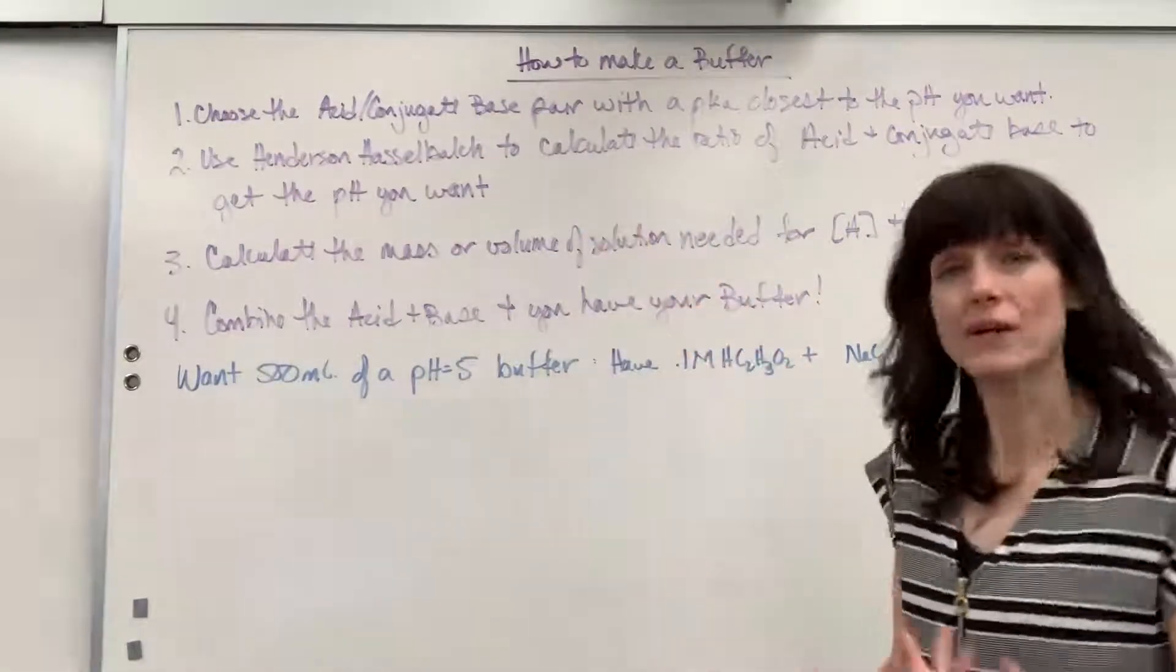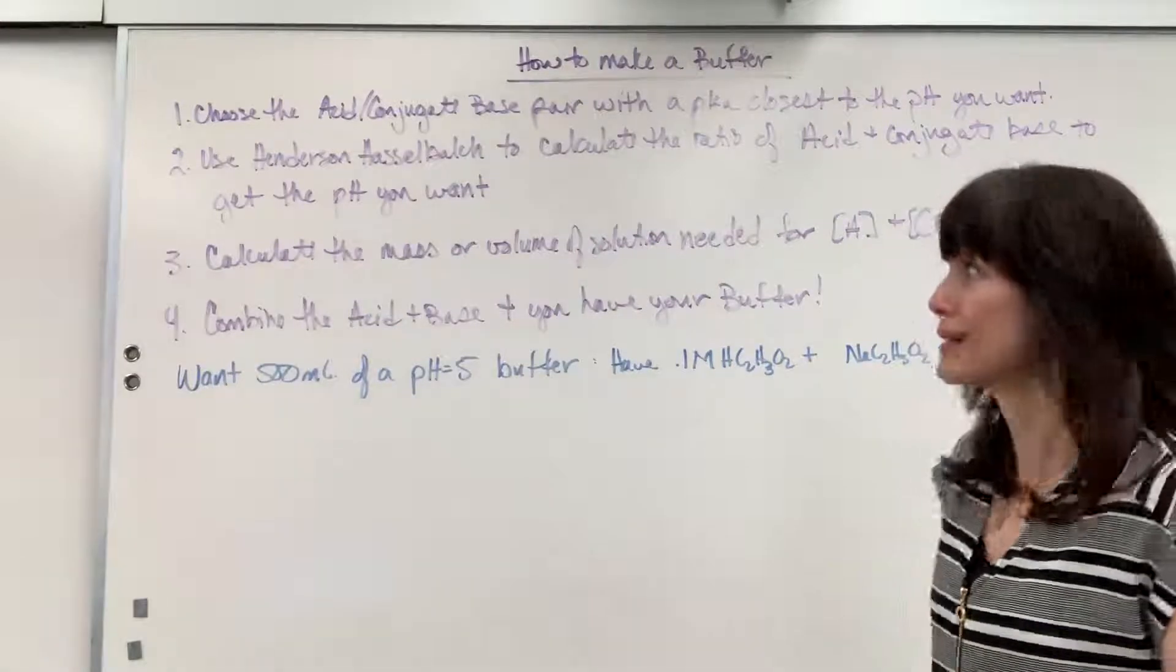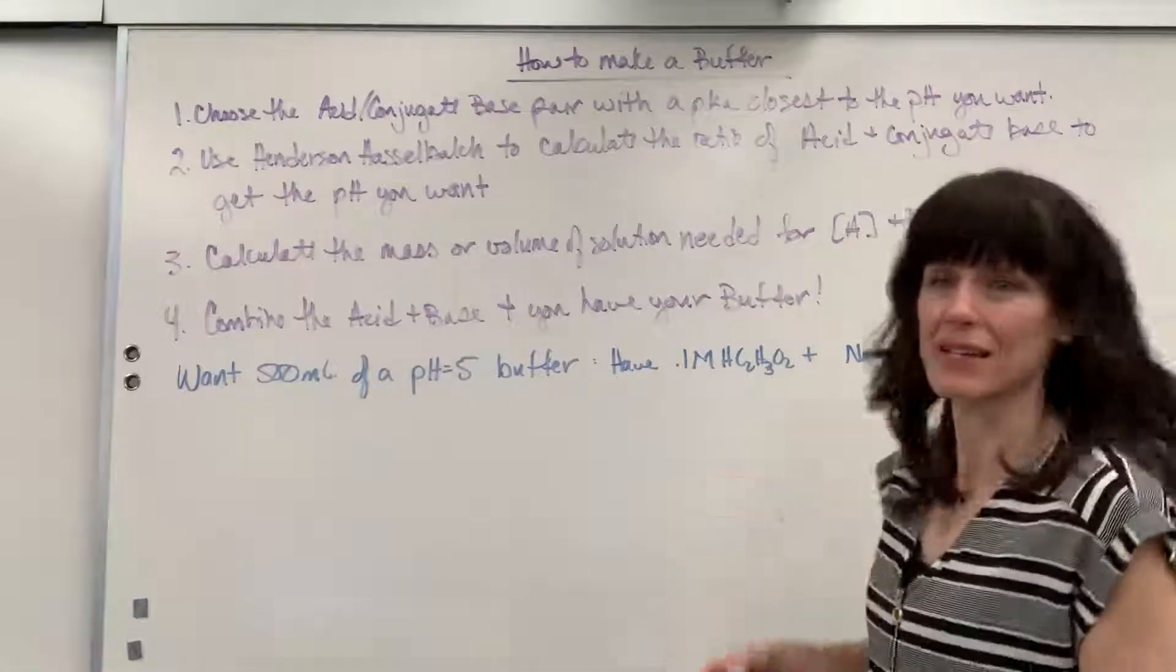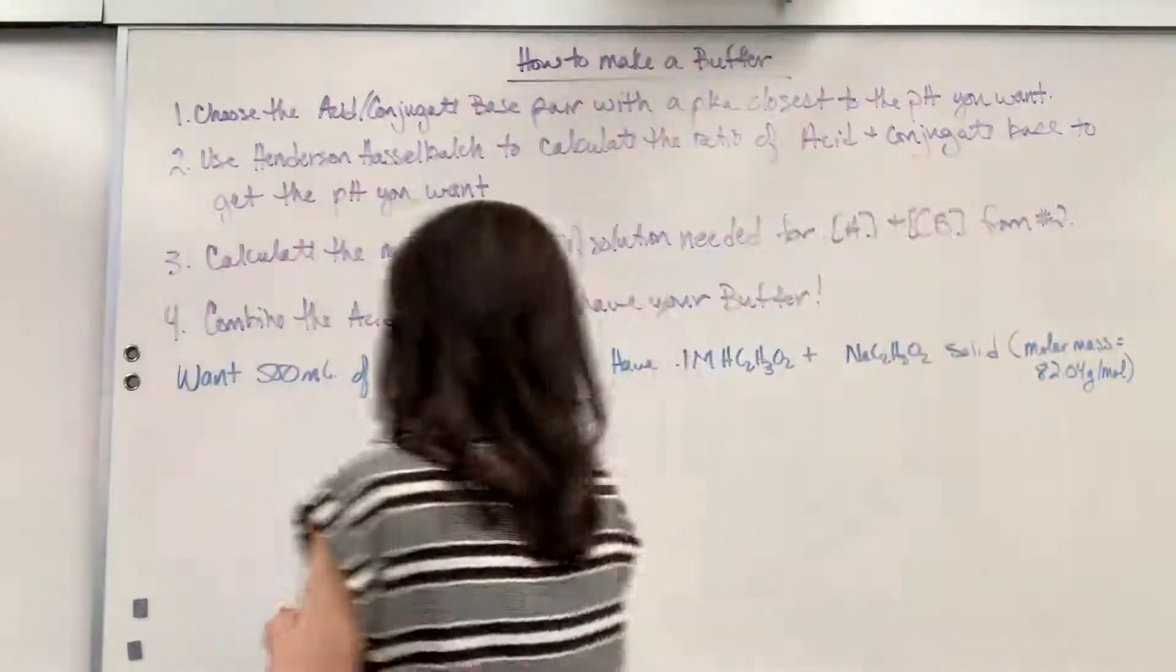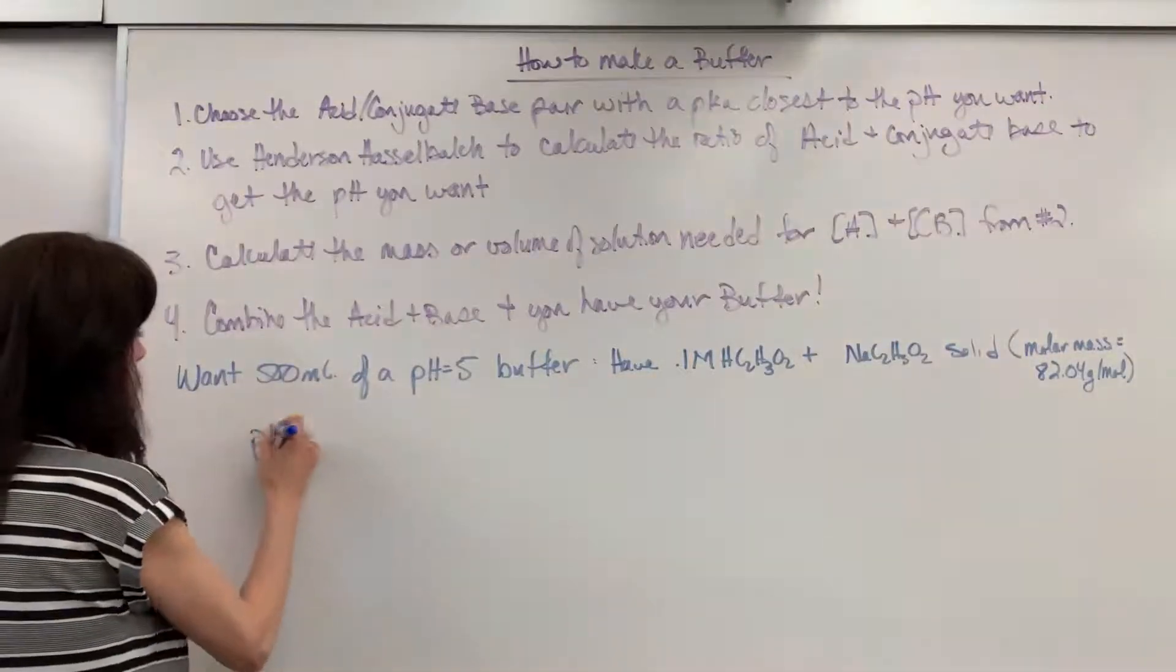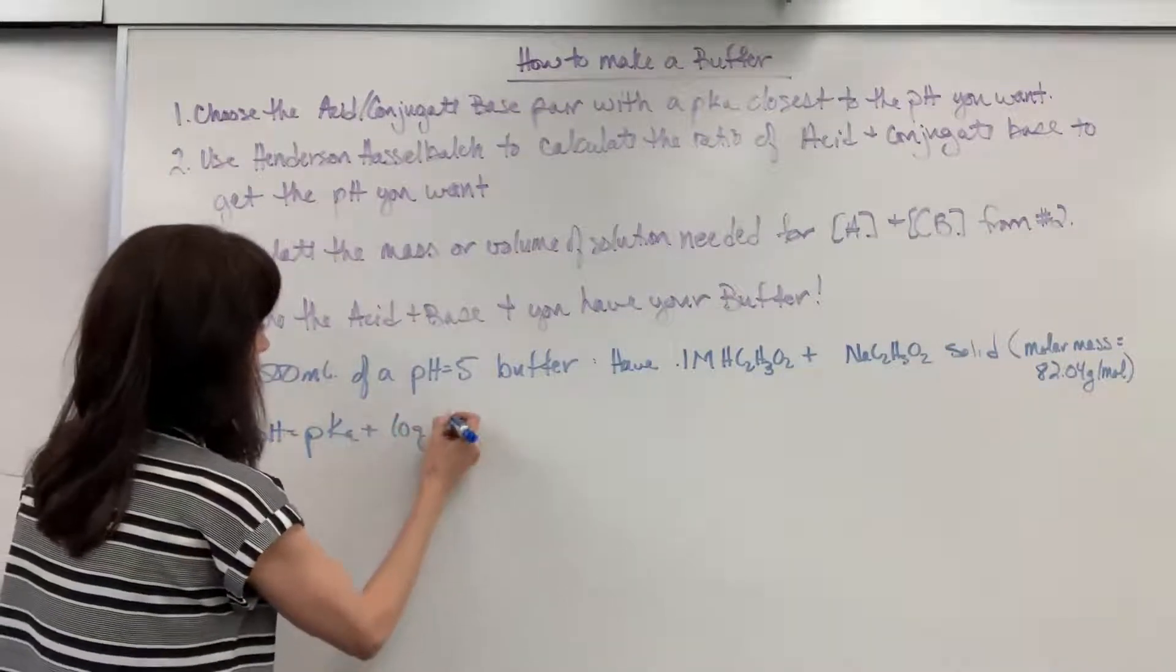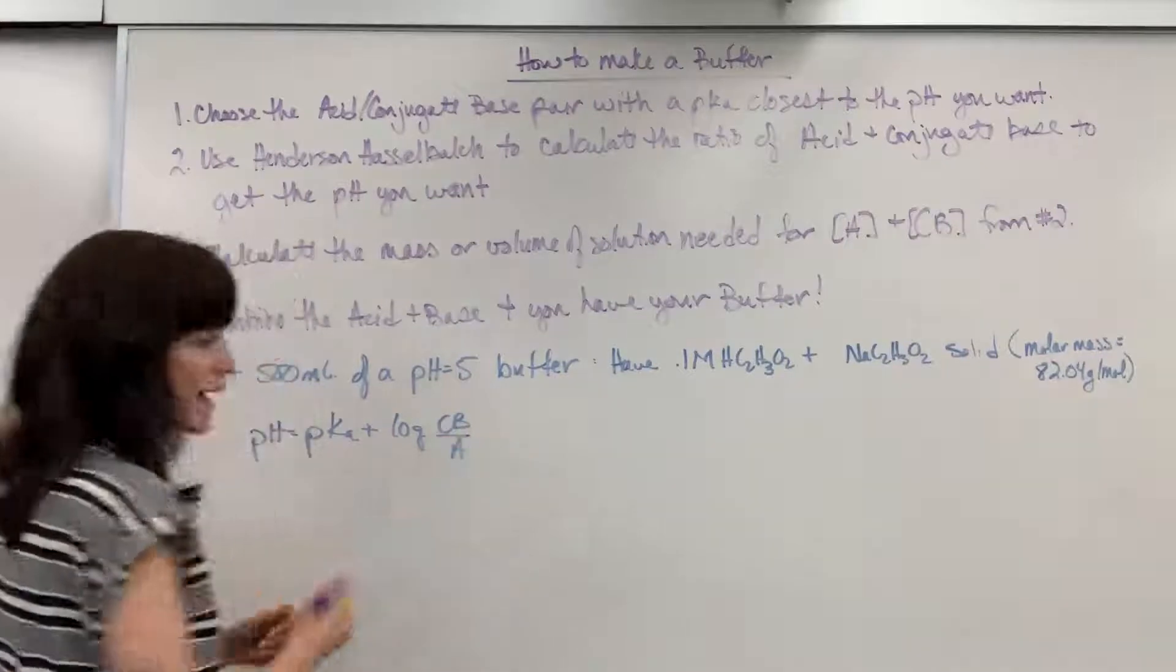Okay, so step two. We're going to use Henderson-Hasselbalch to figure out, well, if I want a pH of 5, what ratio do I need of that acid-base conjugate pair? So here we have it.